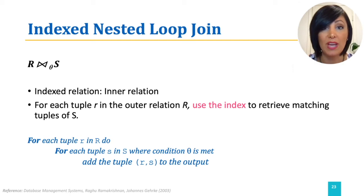In this way, there is no need to enumerate the cross product of R and S, and the join condition is checked using the available index.